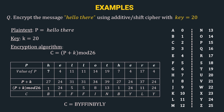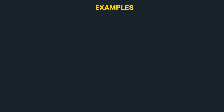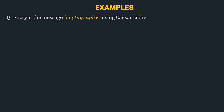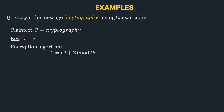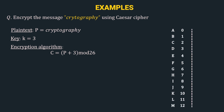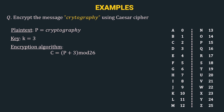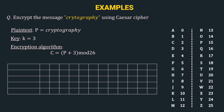Let's look at another example: encrypt the message 'cryptography' using Caesar cipher. Here the plain text P is 'cryptography'. Since this is a Caesar cipher, K is always 3. So K = 3, and the encryption algorithm is C = P + 3 mod 26. Let's again refer to the mapping of alphabets to corresponding number values and calculate a table.